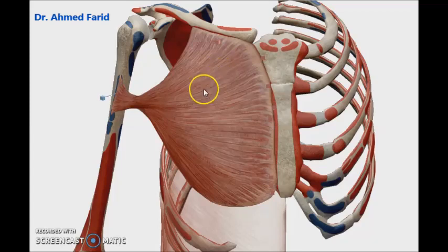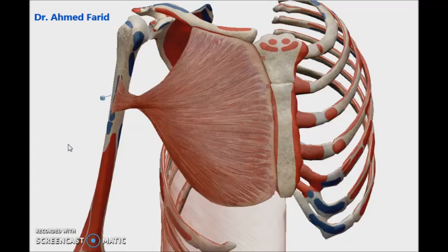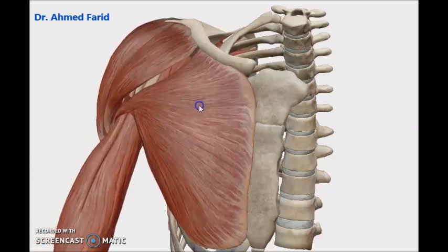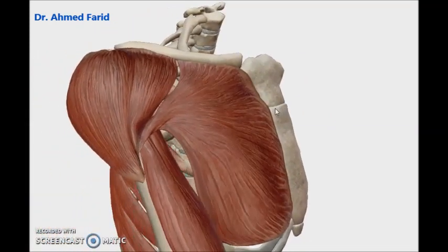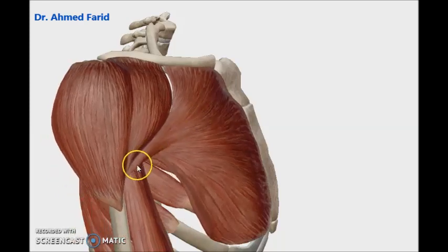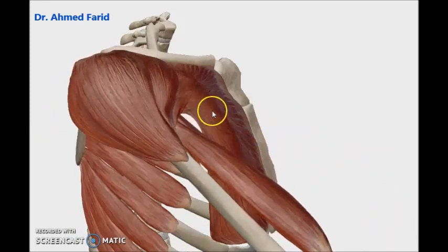The action of this muscle is to approximate the insertion to the origin. Since it is inserted into the humerus, the action will be movement of the humerus at the shoulder joint. The main actions are flexion and medial rotation of the shoulder joint. As you see in this animation, the insertion is approximated to the origin, and the humerus moves anteriorly — this is called flexion of the shoulder joint.